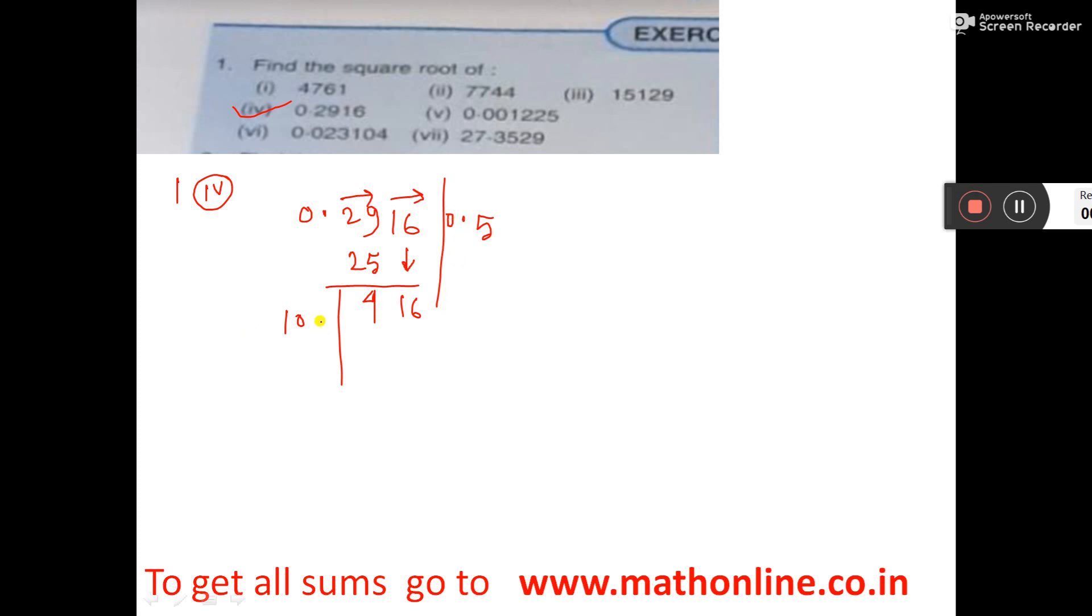Now here you give. If you give 4 times, here also give 4. So 4 4s are 16, 4 1s are 4. So this is the answer. 0 point 54 is the answer.